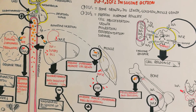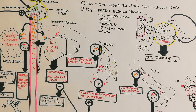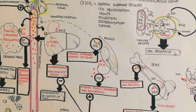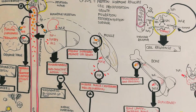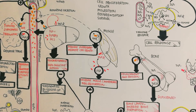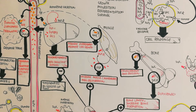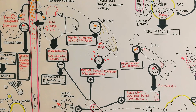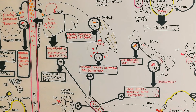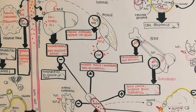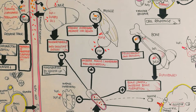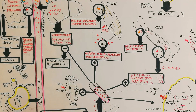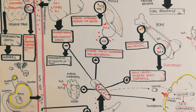IGF-1 and IGF-2 are released during fasting, making fasting very important for lipolysis and decreasing obesity. IGF-1 and IGF-2 are important for the growth and development of the body. In contrast, when insulin increases, it increases fat storage. This summarizes the relationship between insulin, IGF-1, and IGF-2.